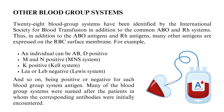Twenty-eight blood group systems have been identified by the International Society for Blood Transfusion, in addition to the common ABO and RH systems. Thus, many other antigens are expressed on the RBC surface membrane. For example, an individual can be AB, D-positive, MN-positive (MNS system), K-positive (KEL system), LEA or LEB-negative (Lewis system), and so on, being positive or negative for each blood group system antigen. Many of the blood group systems were named after the patients in whom the corresponding antibodies were initially encountered.